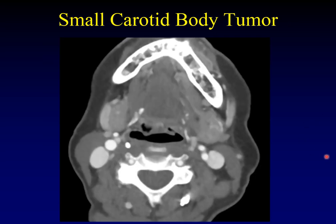These do not have to be large tumors. When they are very small, they are at the location of the carotid body but are extremely vascular. This is exactly what the carotid body looks like, except it's too big.